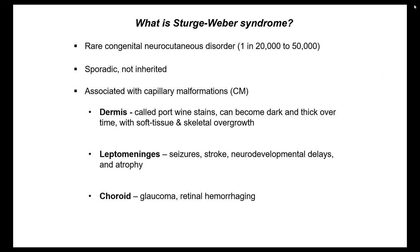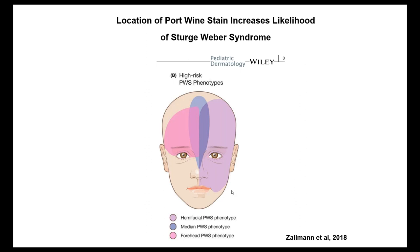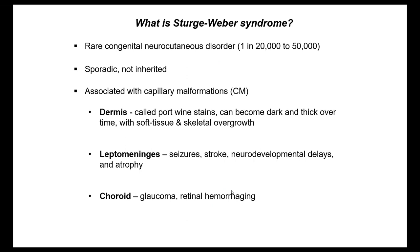The first location is in the dermis. These are called port wine stains — they start off mild when the baby's born but can darken and thicken over time, and are associated with soft tissue and skeletal overgrowth. They're also present in the leptomeninges of the brain, where these capillary malformations are associated with seizures, strokes, neurodevelopmental delays, and atrophy.